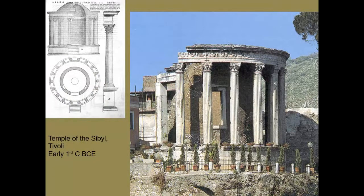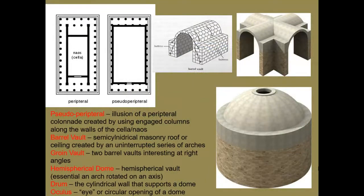We definitely see the Romans taking on different types of architectural forms than the Greeks used. Some temples actually begin to be rounded with domes, as in this example from the early first century BCE. This idea of round arches and domes is really what starts setting Roman architecture apart from the Greek. The advent of the rounded arch allows architects to build taller and distribute weight more efficiently, allowing ever taller and more complex structures. In the Greek tradition we had an inner cella or naos surrounded by a colonnade.